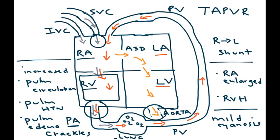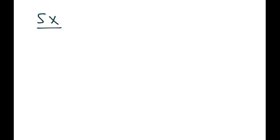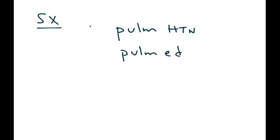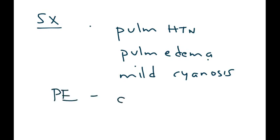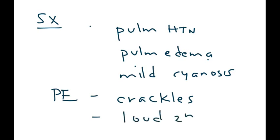Now let's talk more about symptoms, physical exam findings, and diagnosis. As described in the diagram, many of these symptoms result from the patient developing pulmonary hypertension, pulmonary edema, and mild cyanosis. On physical exam, crackles are heard when listening to the lungs due to fluid from pulmonary edema. On heart exam, you will hear a loud second heart sound.